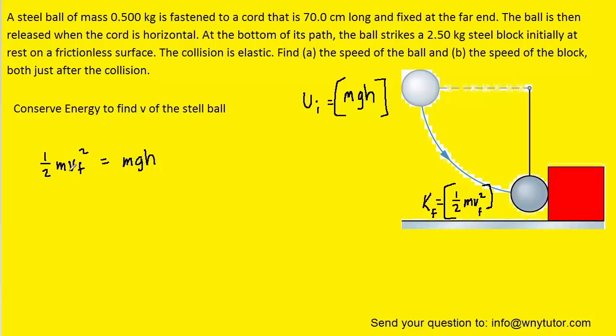The mass appears on both sides of this equation so it can be divided out. We could then multiply both sides of the equation by 2 and then take the square root of both sides.